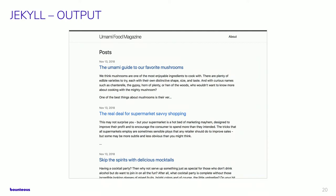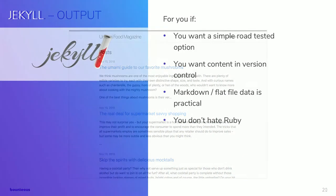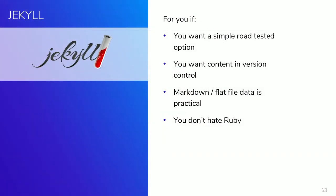Here's a really simple demo example I put together using data from the Umami demo profile. It uses Jekyll and just has a static list of all the posts — you can drill into the details of each post and it's nice, fast HTML. Jekyll might be for you if you want a simple, road-tested option, you want your content in version control, Markdown and flat file data is practical for you, and you also have to not hate Ruby.